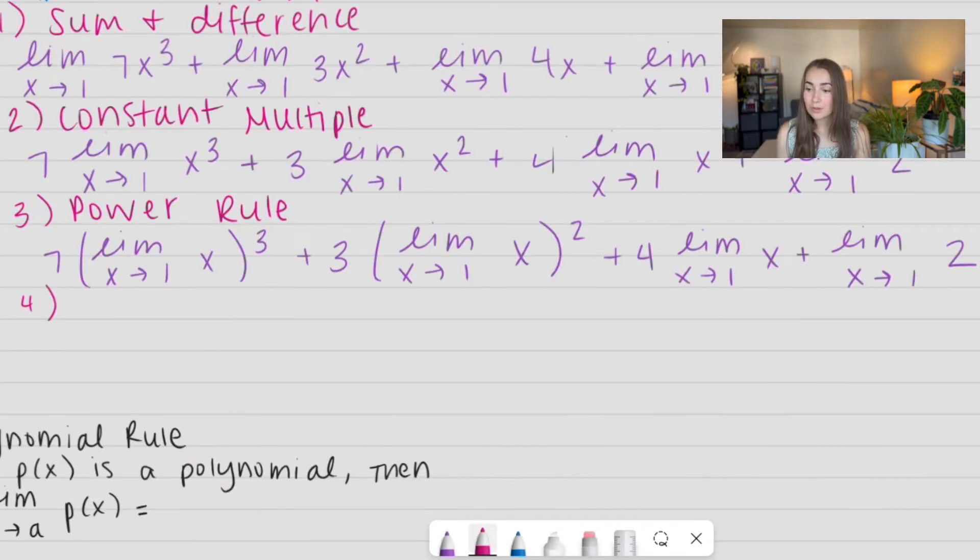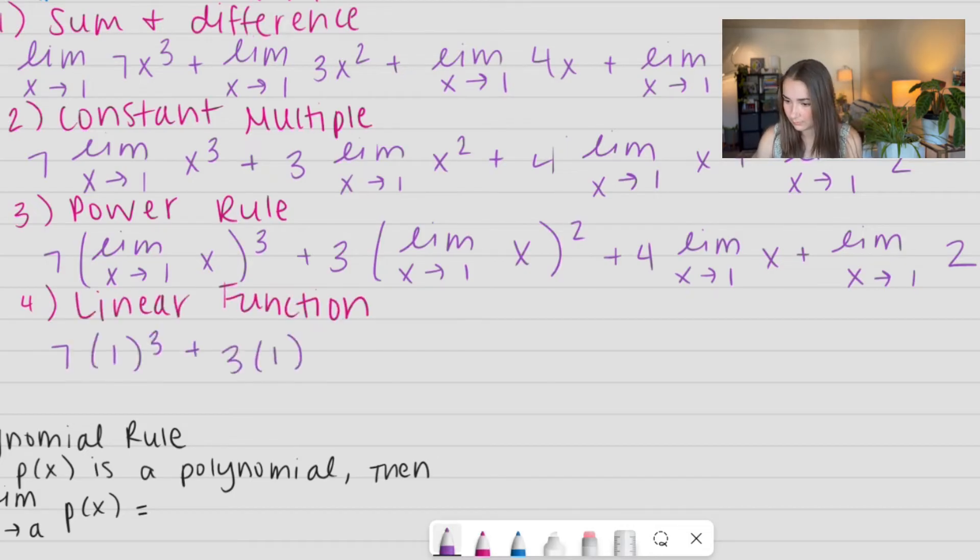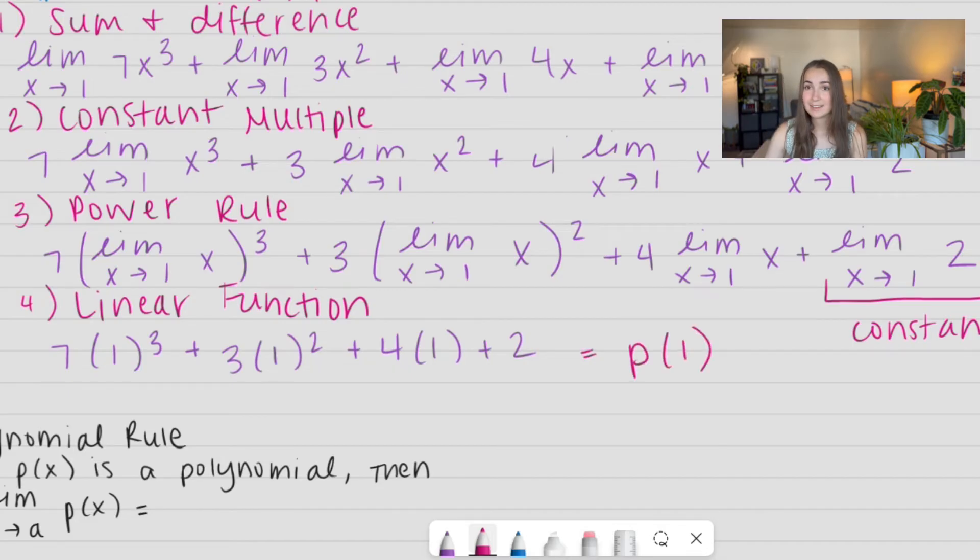For our final rule, I'm just going to go ahead and evaluate those limits as I do a linear function. So, if we notice, this limit right here on the end was the constant rule. When it's a constant, it's just equal to whatever that number is. So, if we look at this, this looks pretty dang similar to the polynomial evaluated at 1, right?